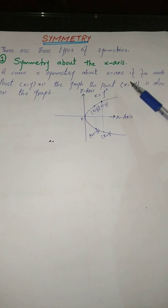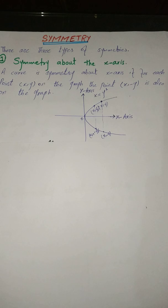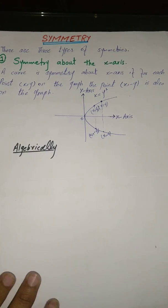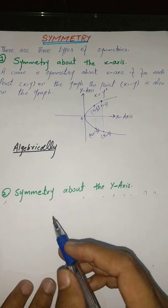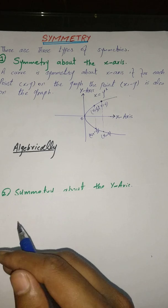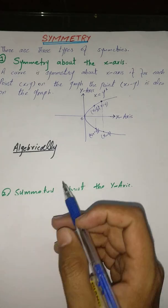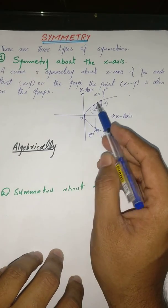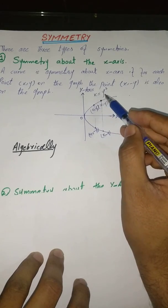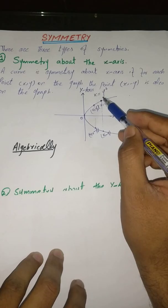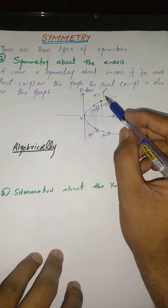We can also check symmetry algebraically. If we have an equation and want to check whether its graph is symmetric about the x-axis or not, we replace y with −y in the equation. If it gives us the same equivalent equation, then the graph is symmetric about the x-axis.